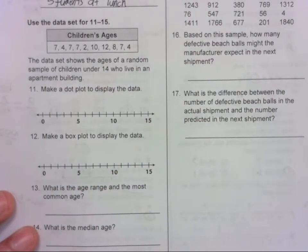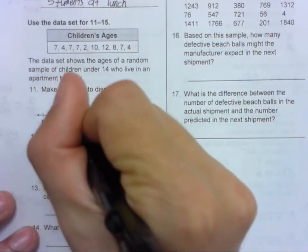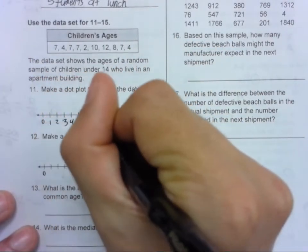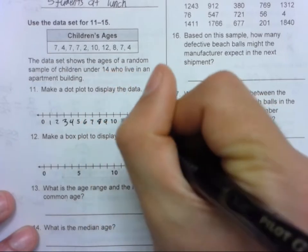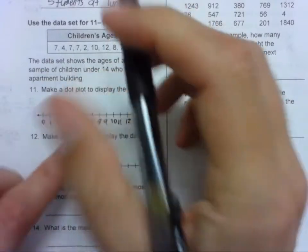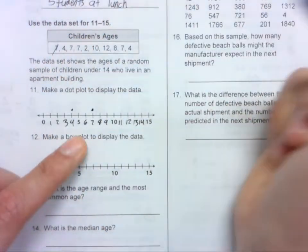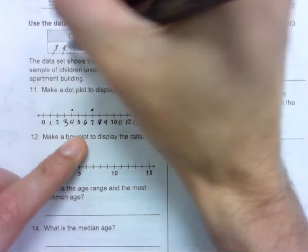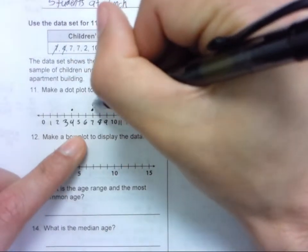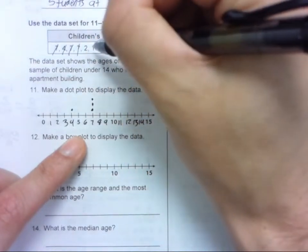So here are the ages. Make a dot plot to display the data. I'm going to fill these in so I don't make any mistakes. So 7, 4, 7, another 7, 2.